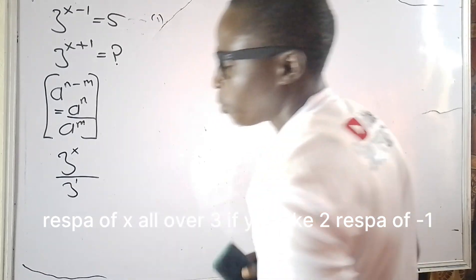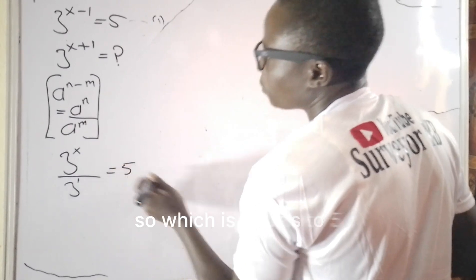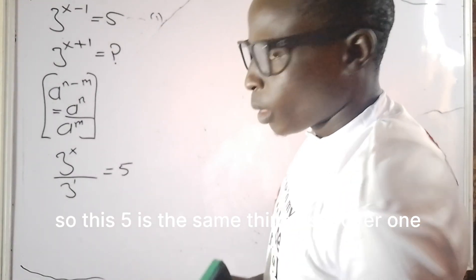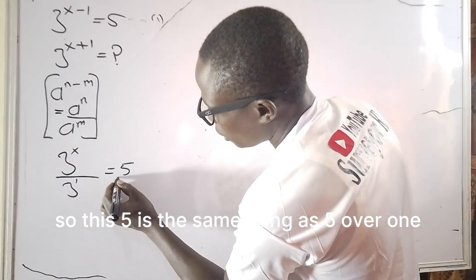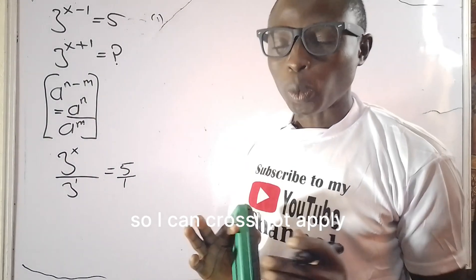Or if you like, 3 raised power of minus 1, which is equal to 5. So this 5 is the same thing as 5 over 1. So I can cross multiply.